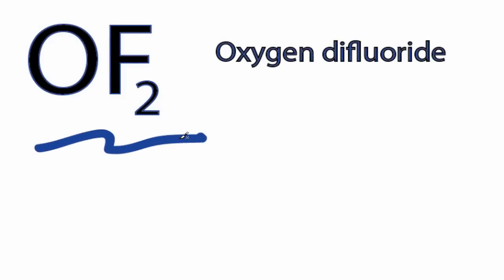For the OF2 Lewis structure, oxygen is in group 16 or 6A on the periodic table, so it has six valence electrons.